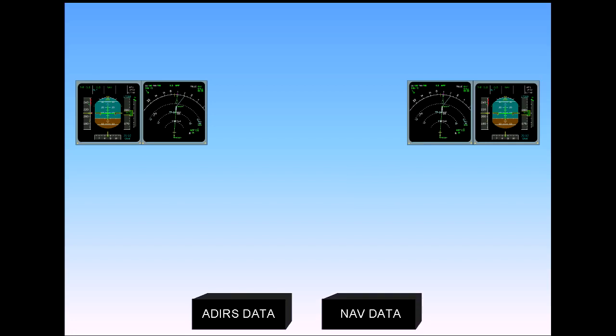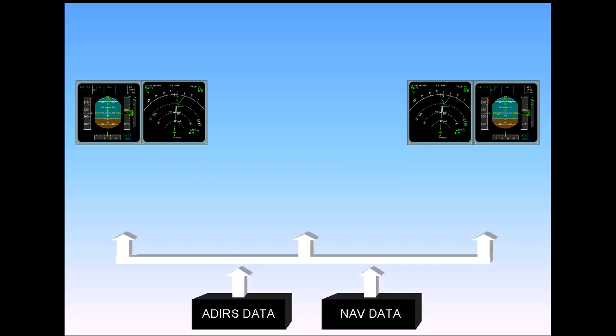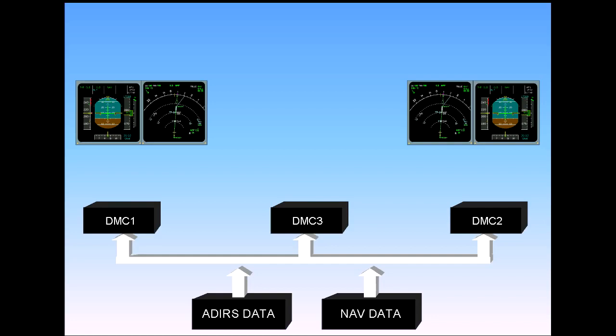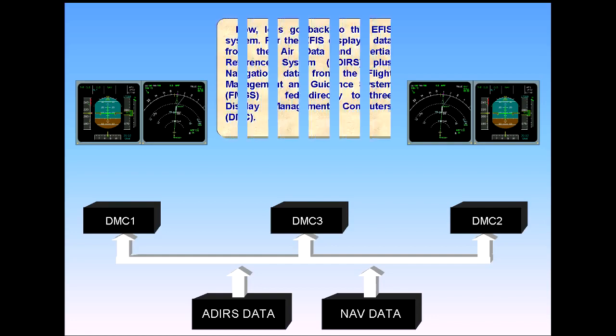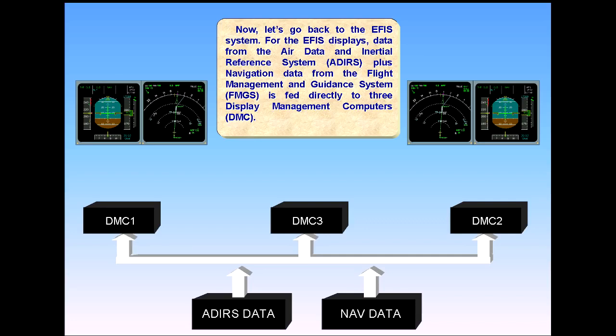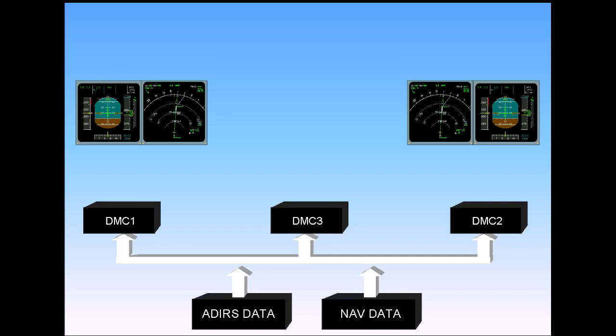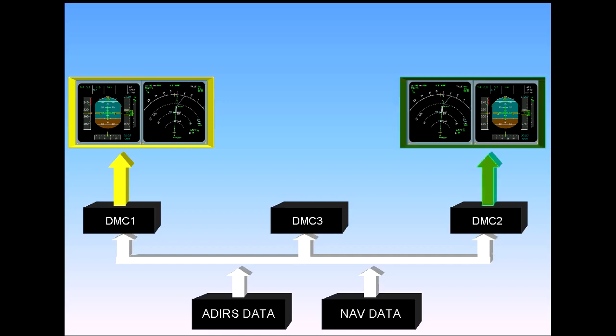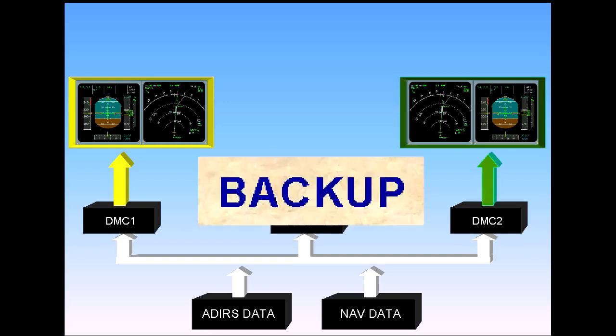For the EFIS displays, data from the Air Data and Inertial Reference System, ADIRS, plus navigation data from the Flight Management and Guidance System, FMGS, is fed directly to three display management computers, DMCs. The three identical DMCs process the data and generate the images to be displayed. Under normal circumstances, DMC-1 supplies EFIS information to the Captain's PFD and ND, DMC-2 supplies the First Officer's PFD and ND, and DMC-3 is available as a backup.